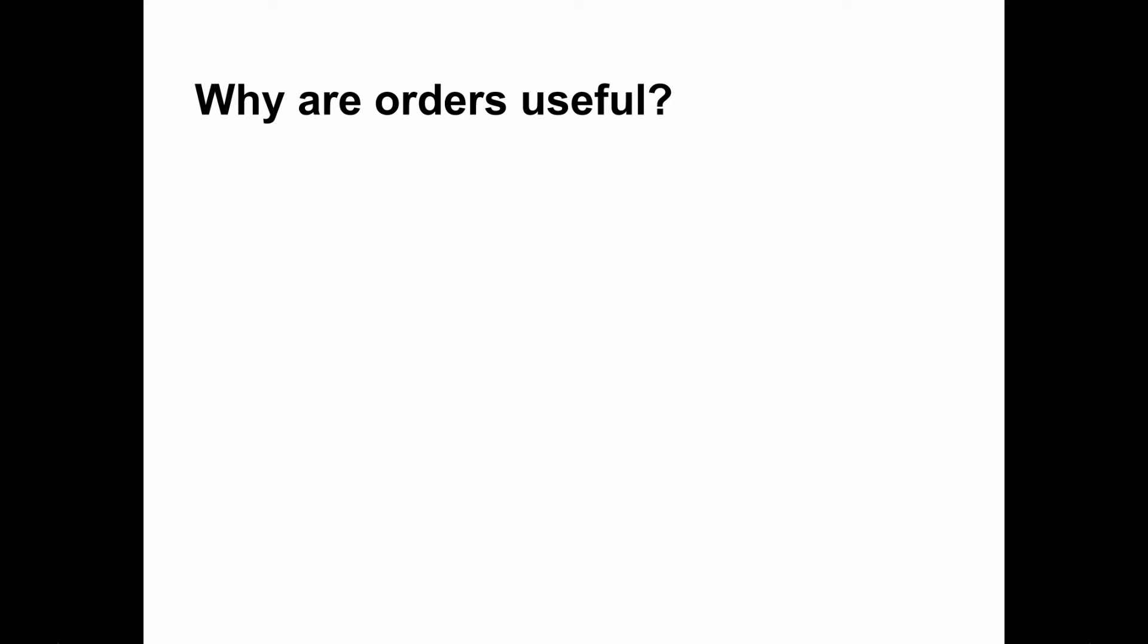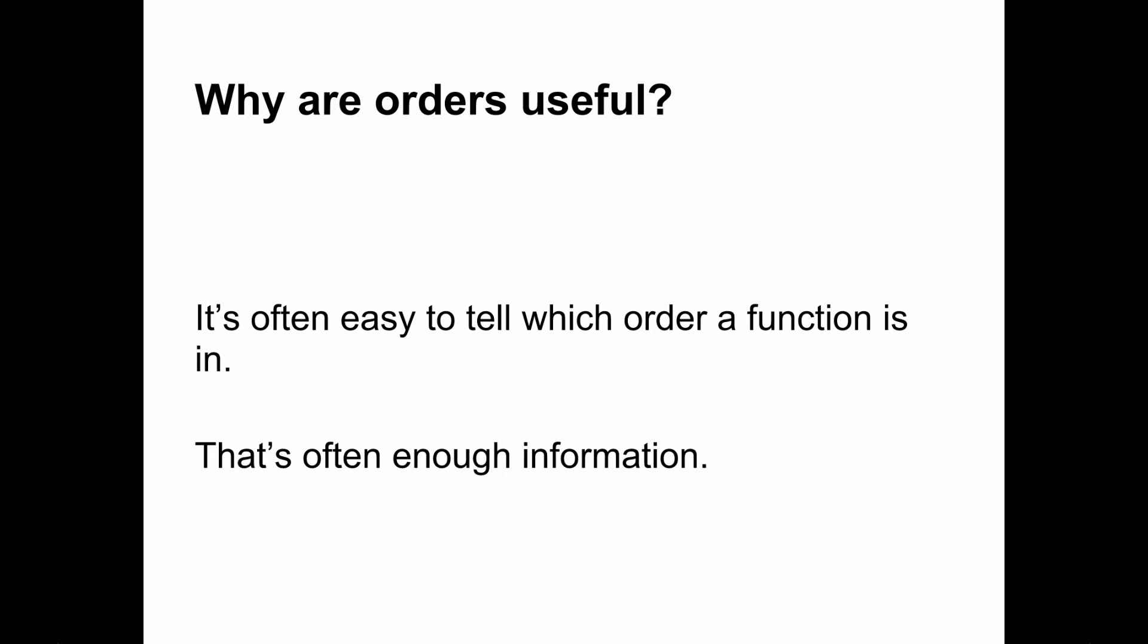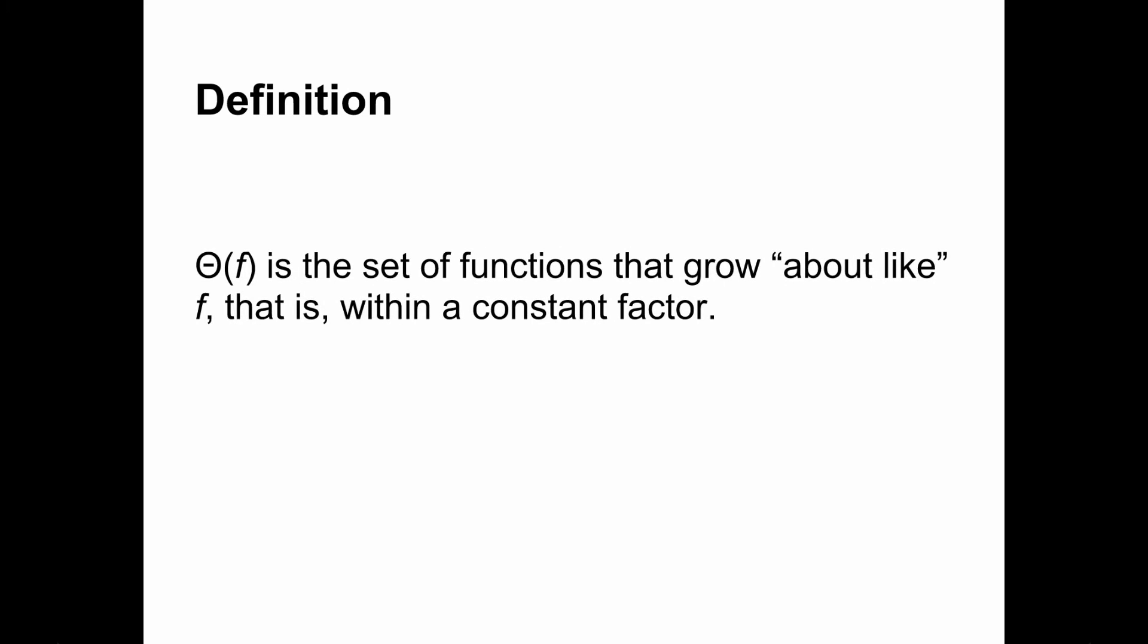Orders are useful for two reasons. It's often easy to tell which order a function is in, and that's often enough information to decide which of two algorithms to use. For any function f, order f is the set of functions that grow about like f, that is, within a constant factor. The function n cubed is, of course, a member of order n cubed. 7n cubed is also in this order, because it grows seven times as fast, and seven is a constant. n to the fourth is not in this order, because it grows n times as fast, and n is not a constant.